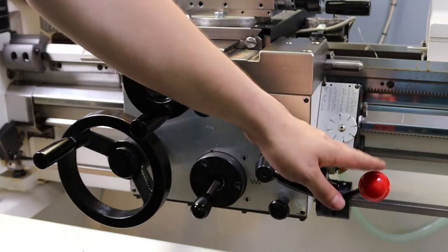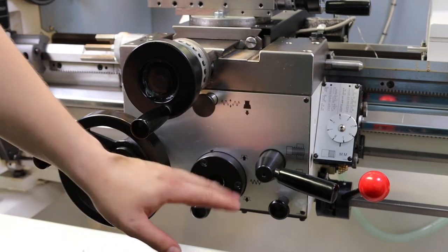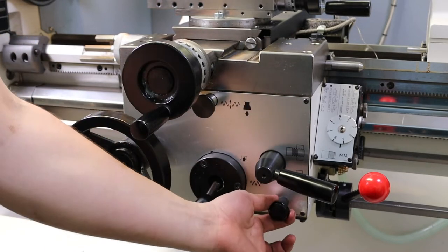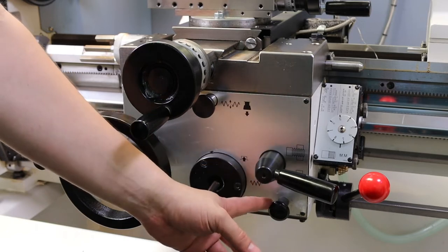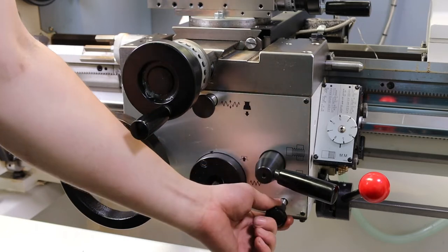On the bottom right of the apron, we have a plunger, and this is for lubrication. Most machines with an apron will have a plunger similar to this, and all that does is push hydraulic fluid through the gearbox and keep everything nice and well oiled.